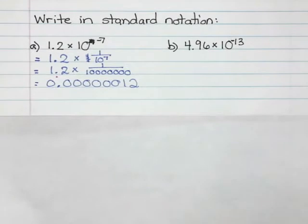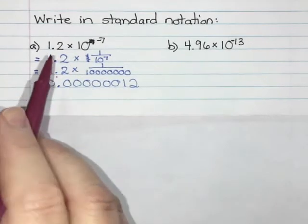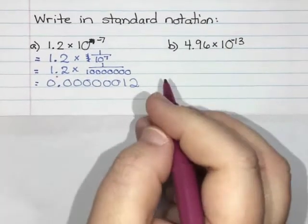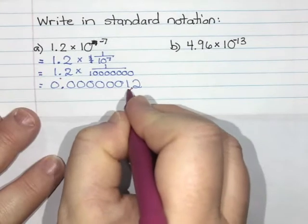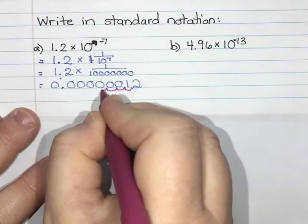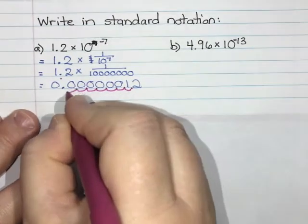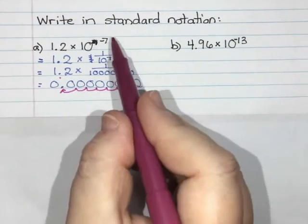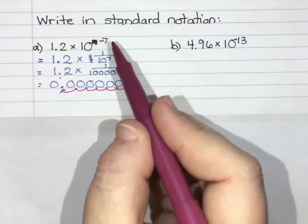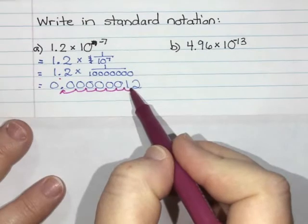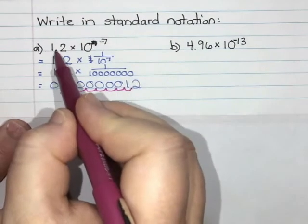So that's how you would do it on your calculator. Now, third option: you will notice we moved the decimal 1, 2, 3, 4, 5, 6, 7 spots, which matches our exponent, right?